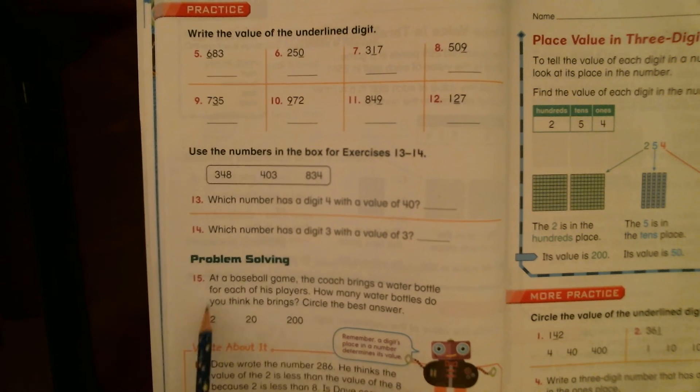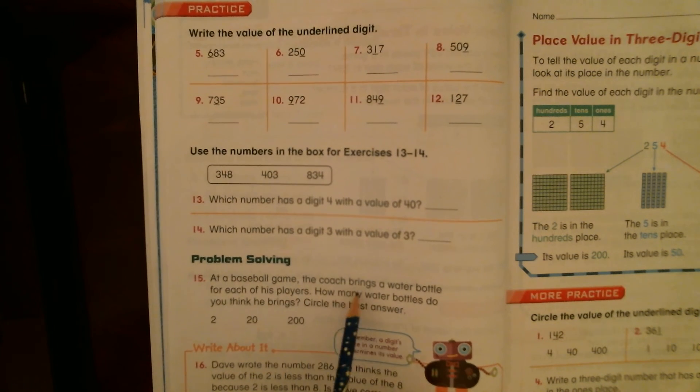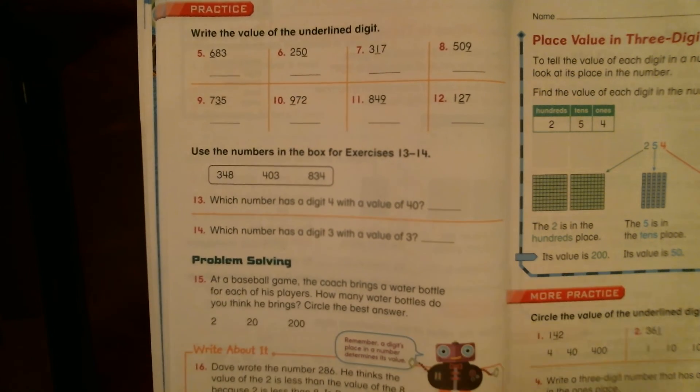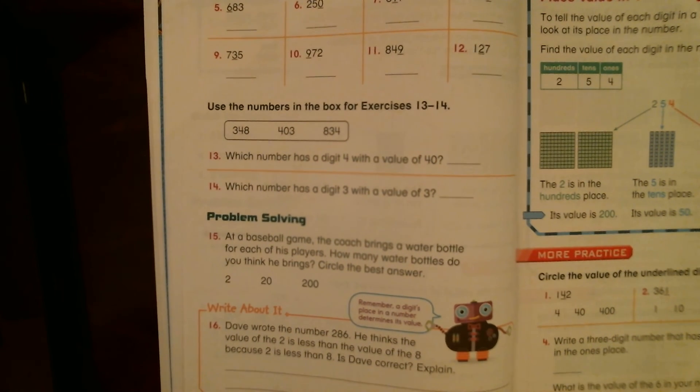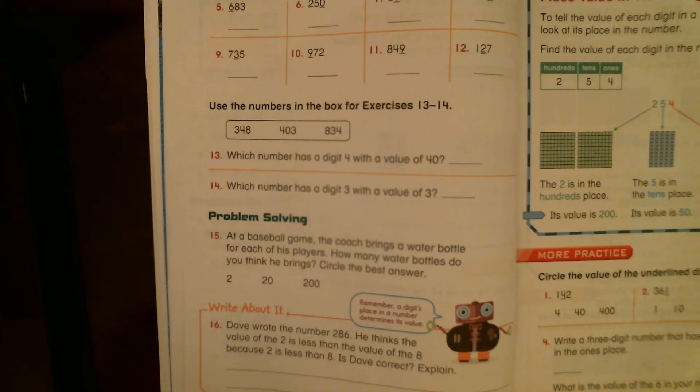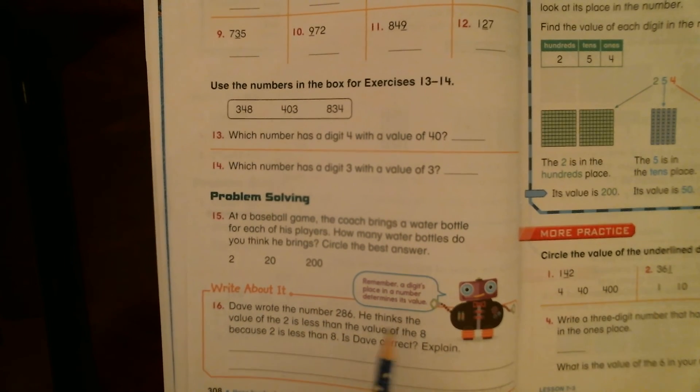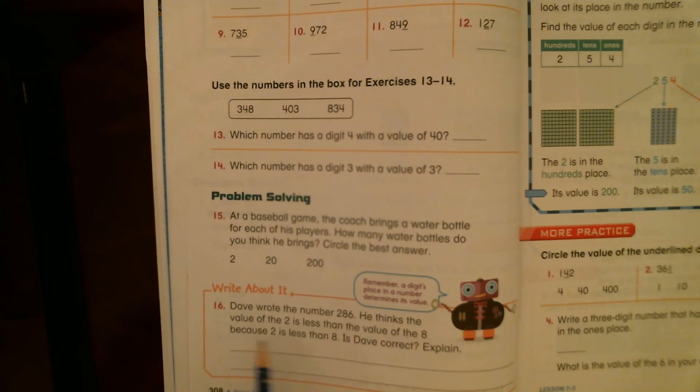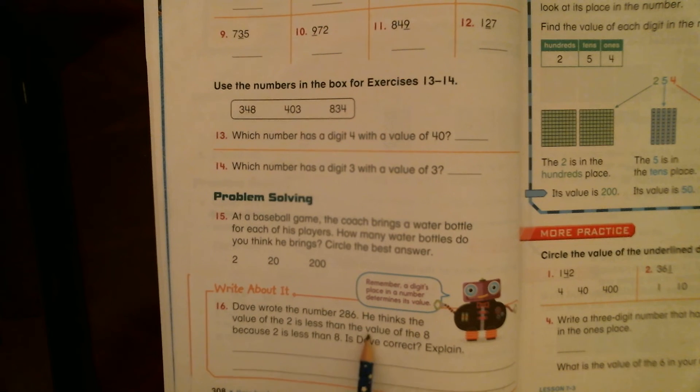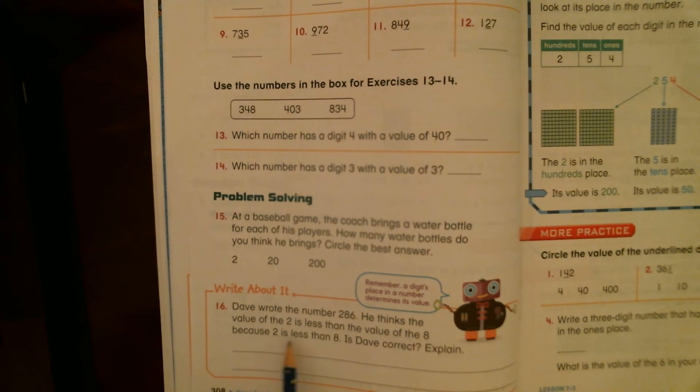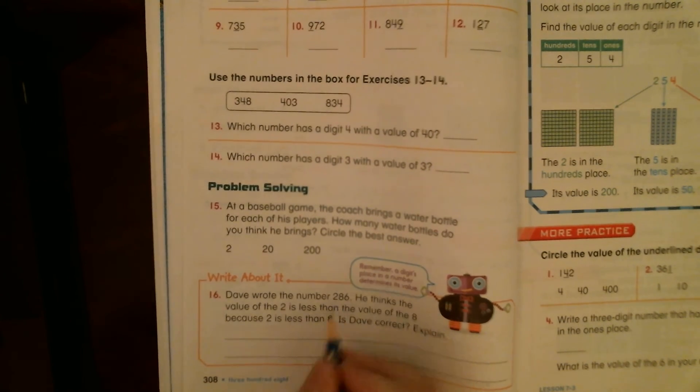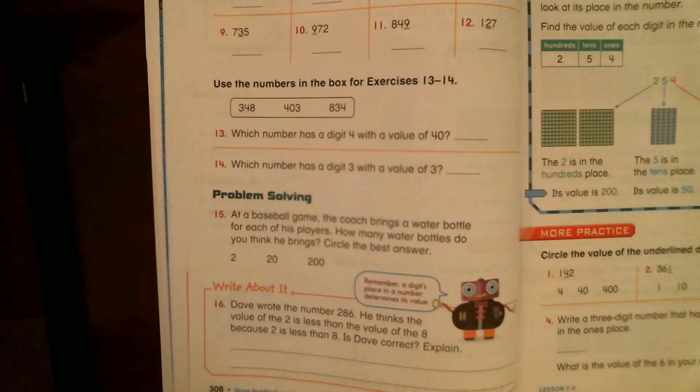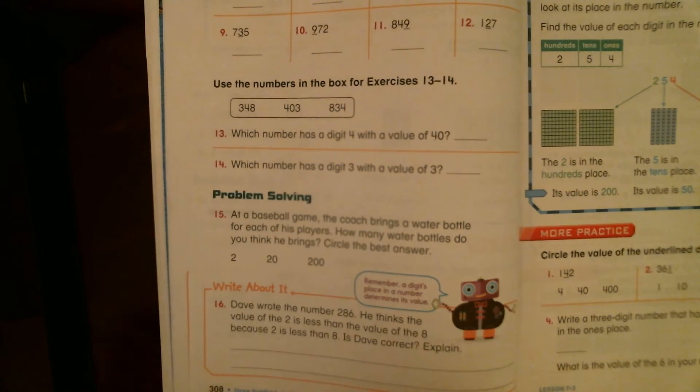All right? This is thinking about how many people would be on a baseball team. About how many players would there be on a baseball team. All right? Let's see if you can figure out and write about it. Dave wrote the number 286. He thinks the value of the two is less than the value of the eight because two is less than eight. Is Dave correct? Explain.